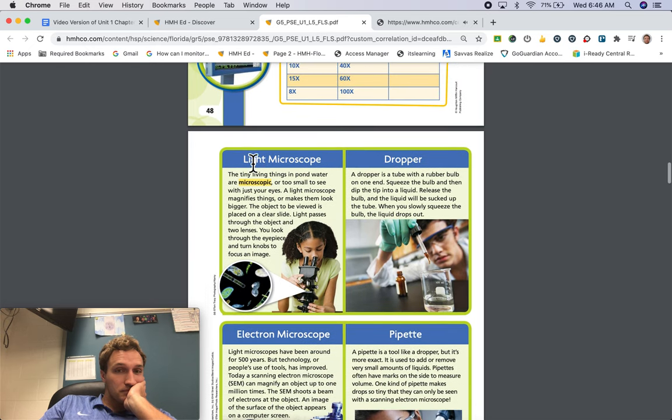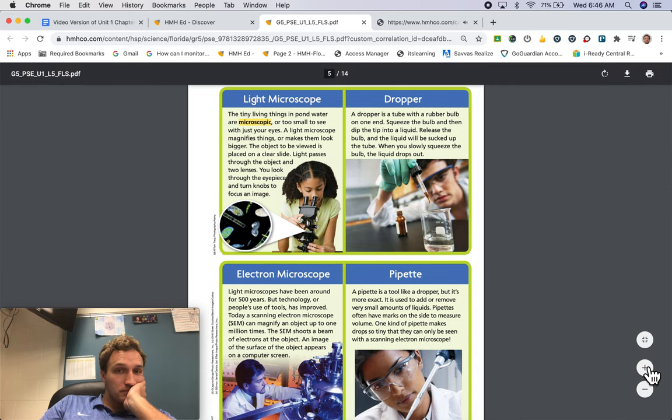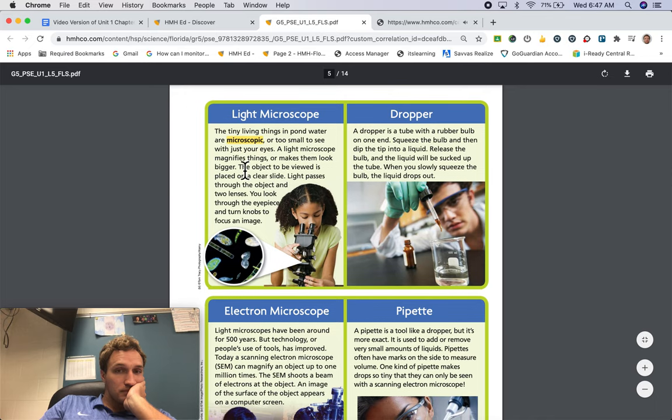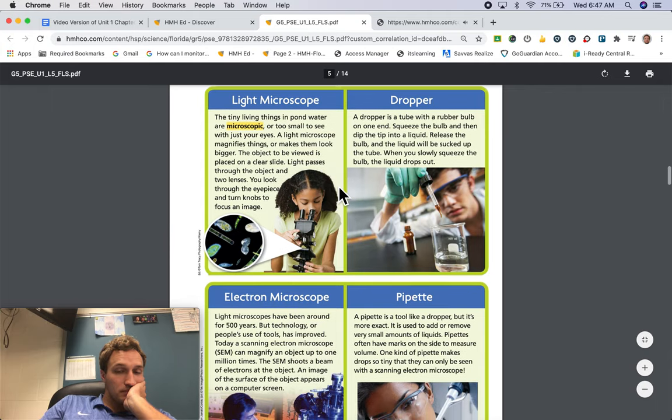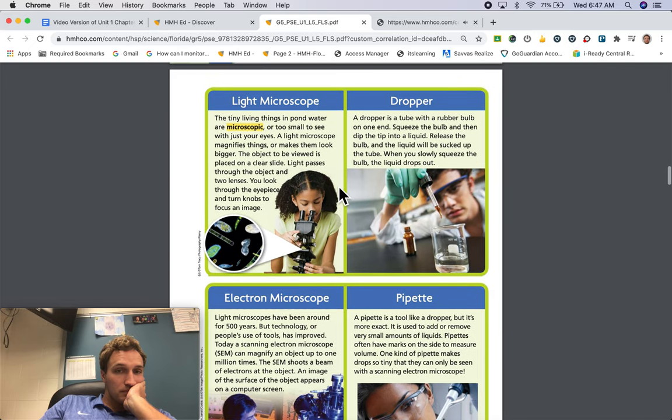Light microscope. The tiny living things in pond water are microscopic or too small to see with just your eyes. A light microscope magnifies things or makes them look bigger. The object to be viewed is placed on a clear slide. Light passes through the object and two lenses. You'll look through the eyepiece and turn knobs to focus an image.